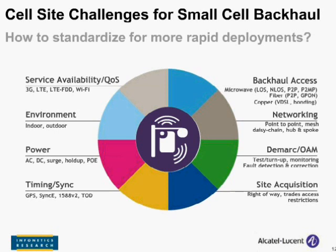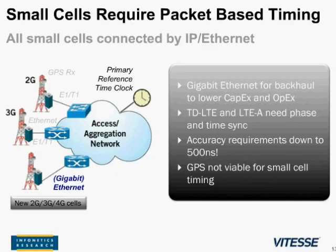Thanks, Heidi. I'm now going to pass to Martin Nuss from Vitesse to give more detail on timing synchronization for small cell backhaul connections. Small cells will actually require very accurate timing. Without accurate timing, calls will drop, coverage will be bad, throughput will decline, and video streams will be interrupted. That means customers will be dissatisfied with the service, and operators aren't getting the return on investment they put into their network.